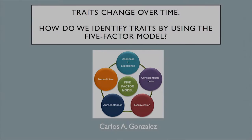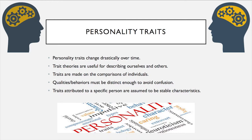I would like to speak a little bit about personality and the five-factor model. Personality traits change over time. Picture a high school reunion, for instance. Your former classmates will display big differences when compared to their high school selves. How do we determine these changes? By observing traits. Trait theories are useful for describing ourselves and others.